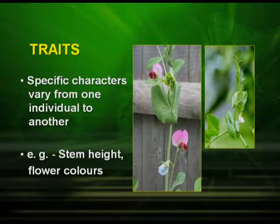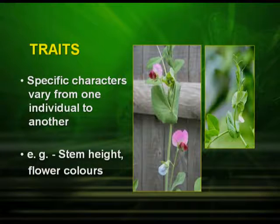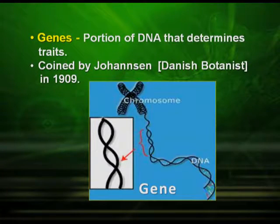We often talk about traits. These are specific characters that vary from one individual to another. For example, a tall plant versus a short plant, or flower colors — red or white. Different characters studied in genetics are called traits. Genes are the portion of DNA that determines characters, and the term was coined by Johansson, a Danish botanist, in 1909.